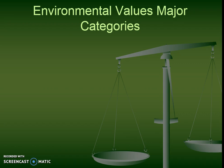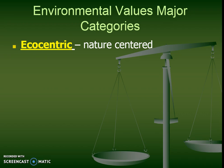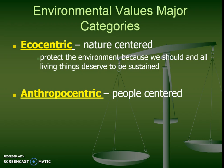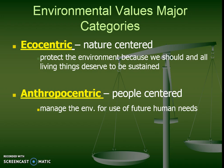There are a couple of major categories of environmental values. They are: ecocentric — nature-centered — where we protect the environment because all living things deserve to be sustained. The next one is anthropocentric, with 'anther' meaning people — people-centered — also protecting the environment, but doing so in order to manage it for future human needs. All of these involve protecting the environment, but the difference is the 'why' behind it.